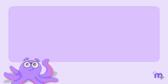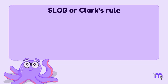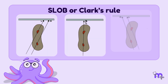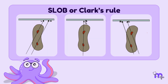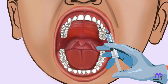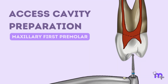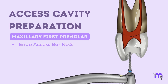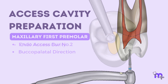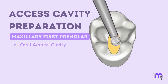As you may recall, the SLOB rule, or Clark's rule, comes in handy while treating multi-rooted teeth. After injecting local anesthesia, I began access opening by placing the endo-access burr number 2 at the center of the occlusal table, between the two cusps, along the long axis of the tooth. I then moved the burr in the buccopalatal direction to create an oval access cavity.